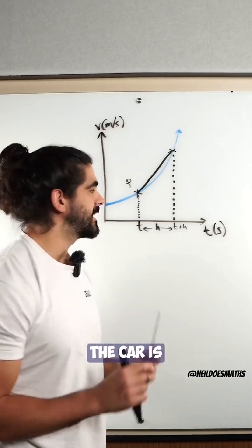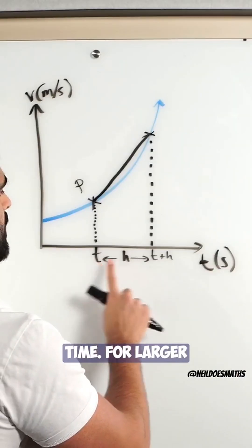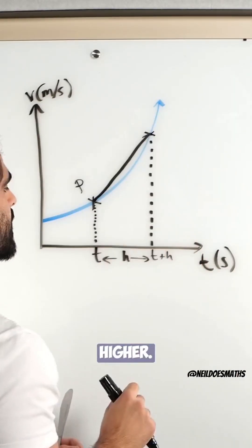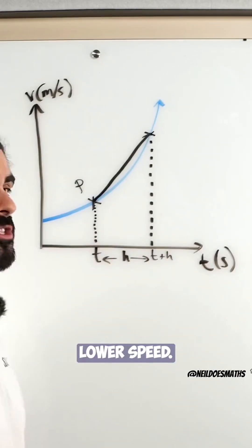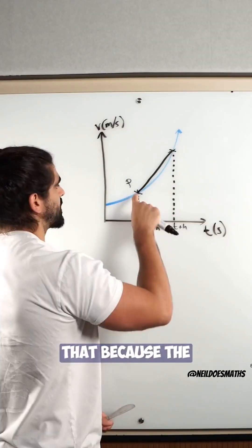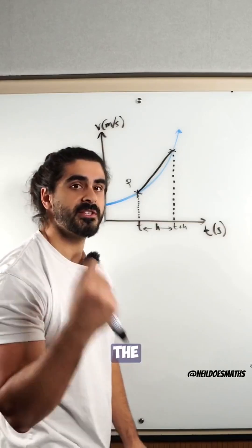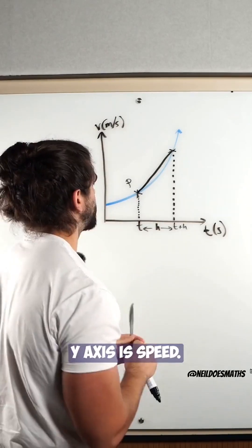Now the speed of the car is dependent on time. For larger times, the speed is higher. For lower times, lower speed. And you know that because the height determines the speed, because the y-axis is speed.